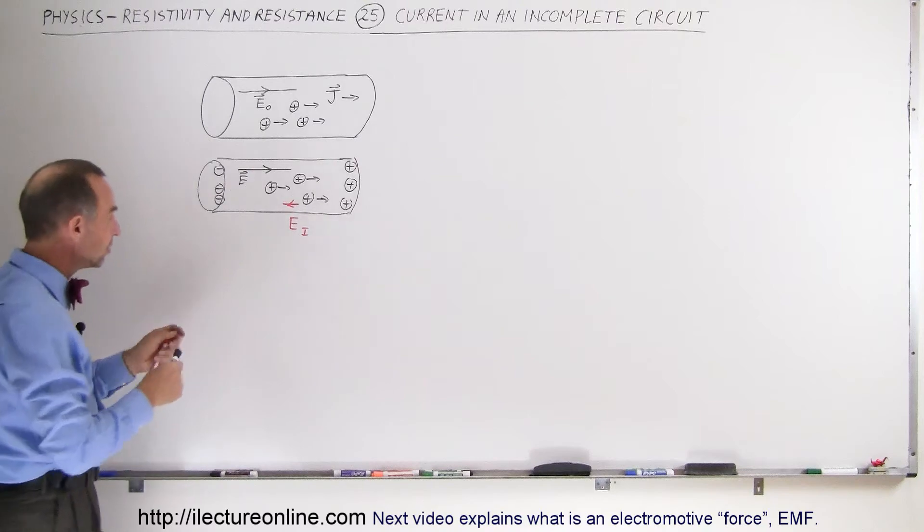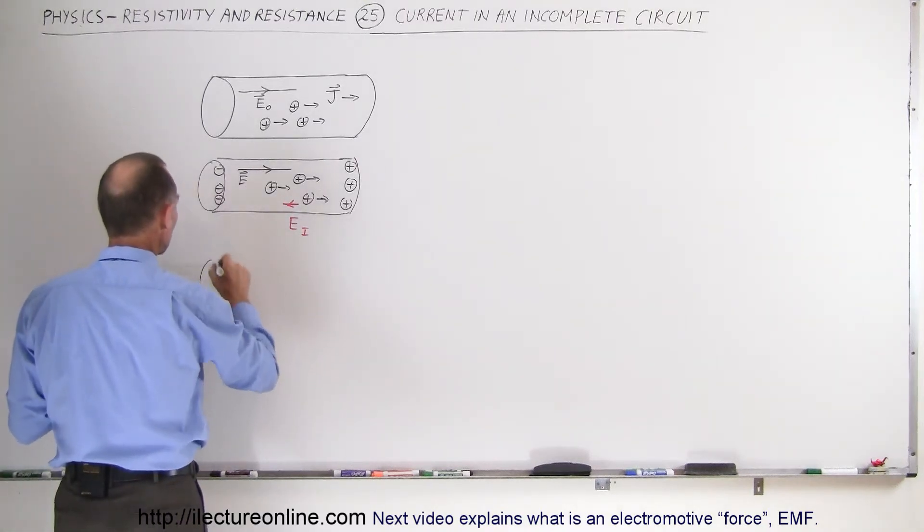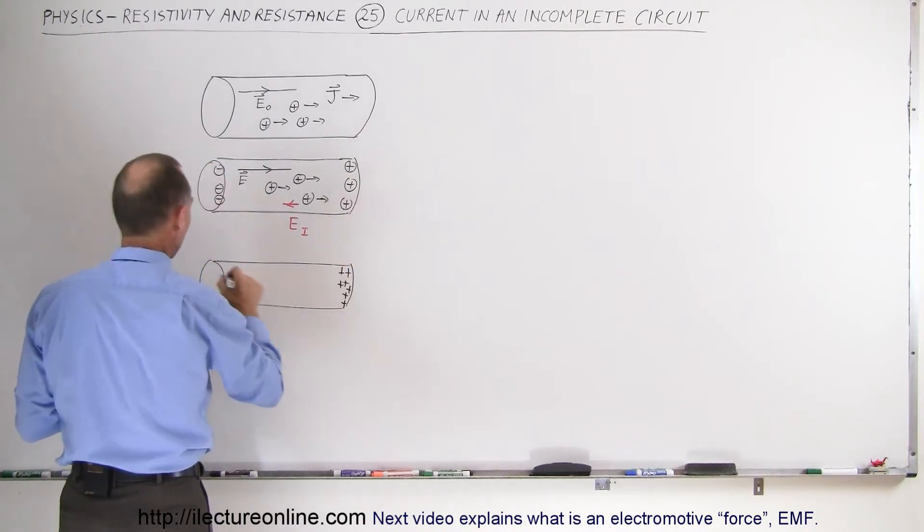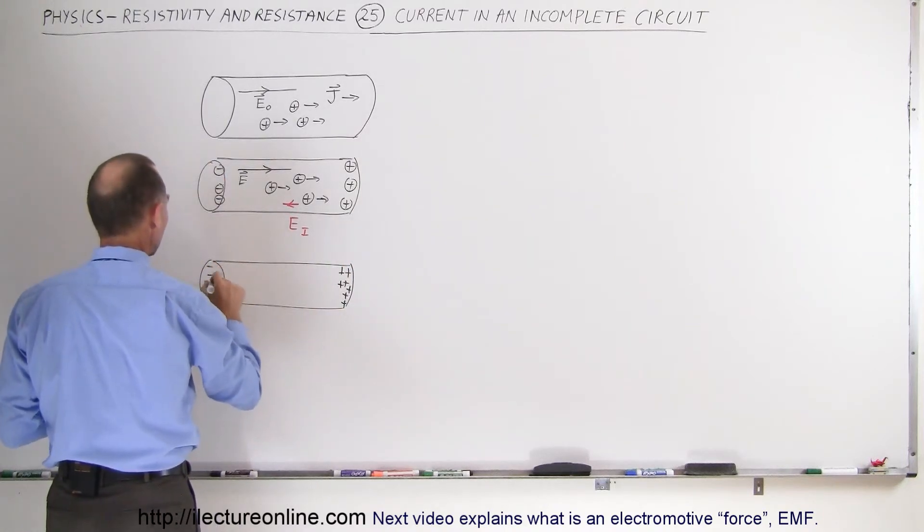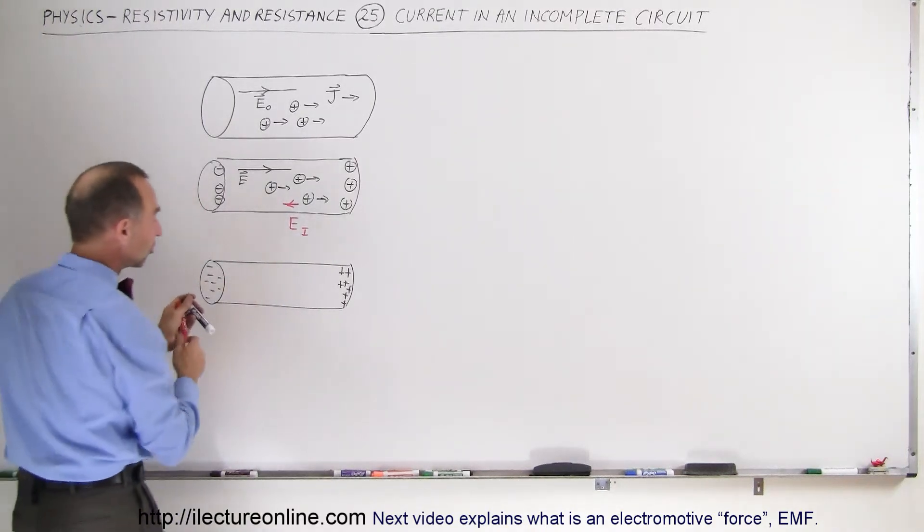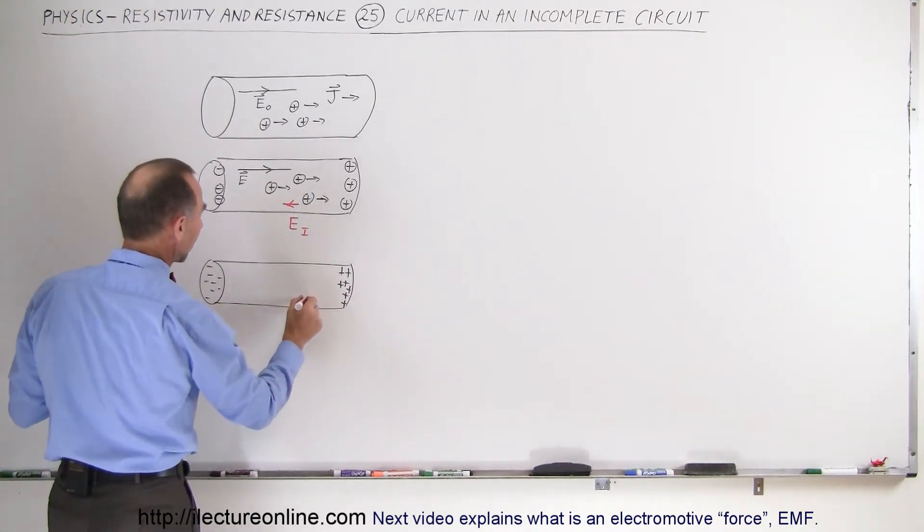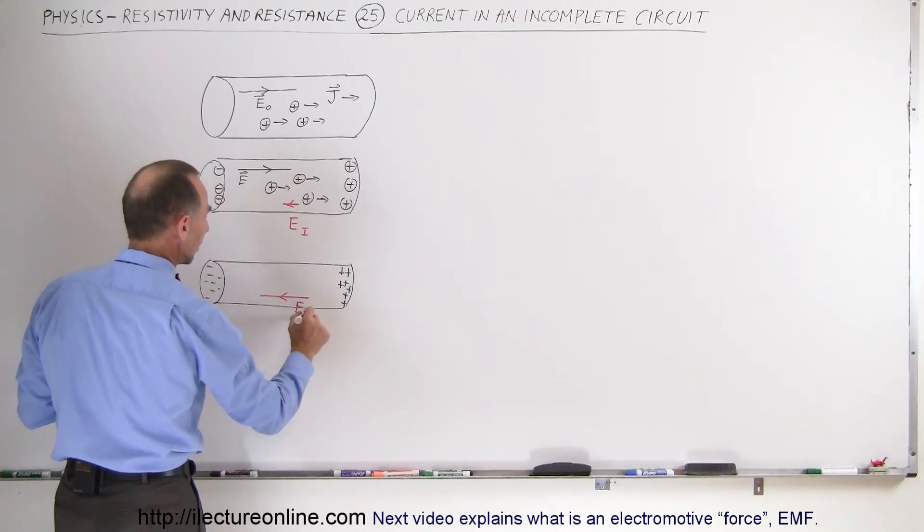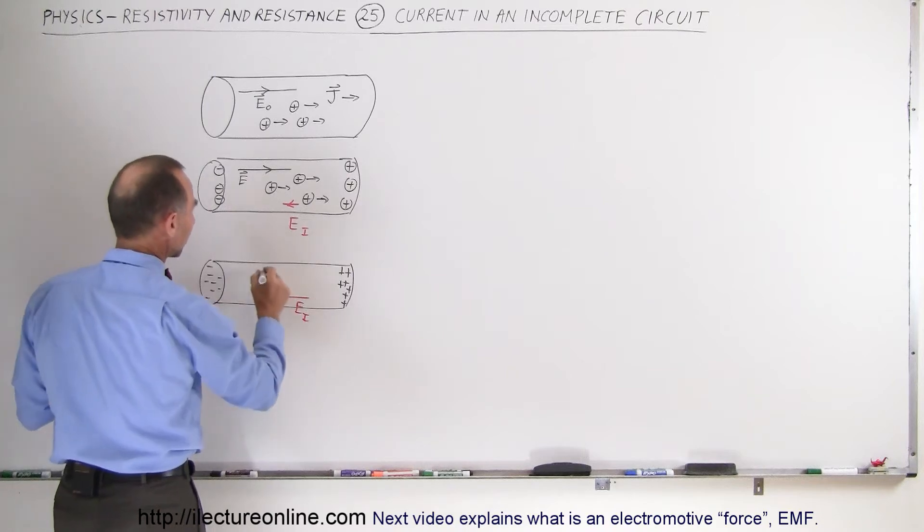If the process continues, eventually so many charges will pile up on the other side and so many missing positive charges on the left side that the induced electric field by these charges here will get to be so strong that it begins to be equal in magnitude to the original electric field that was there in the first place.